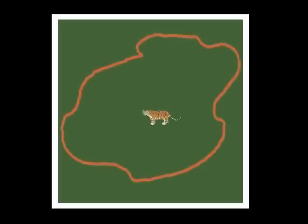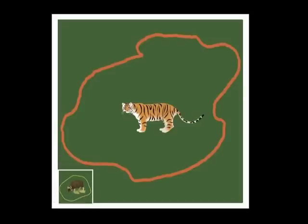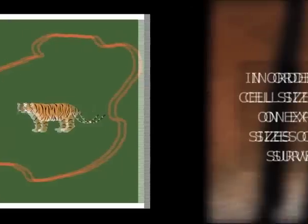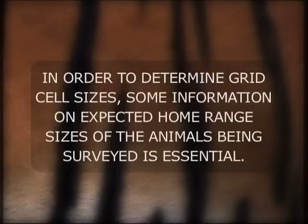Grid cell sizes should be determined according to the animal being surveyed. Tiger occupancy surveys will need large cell sizes, while prey occupancy surveys require smaller cell sizes. In order to determine grid cell sizes, some information on expected home range sizes of the animals being surveyed is essential.